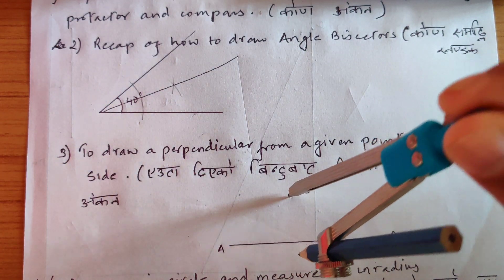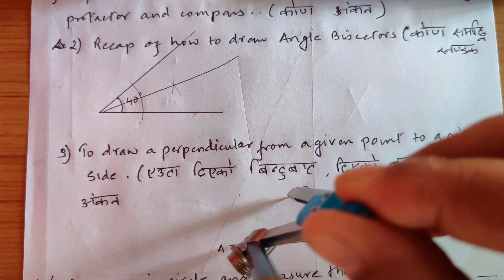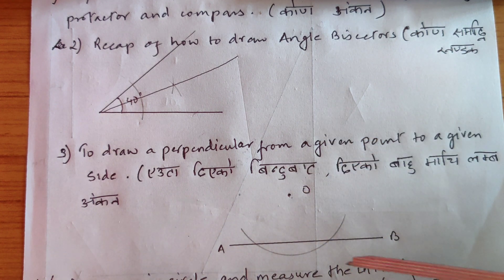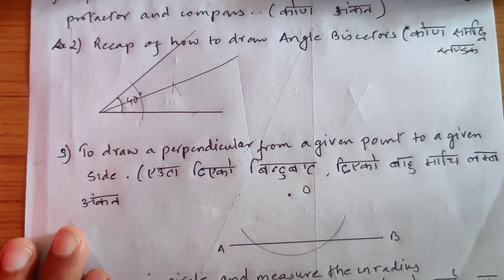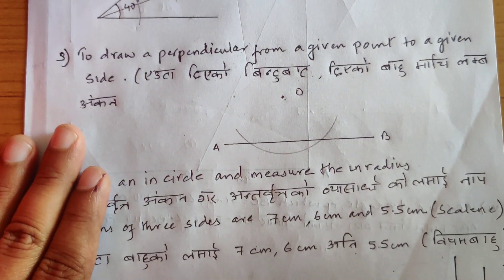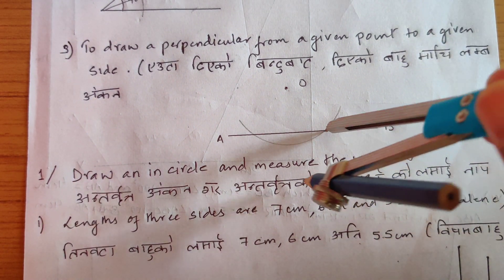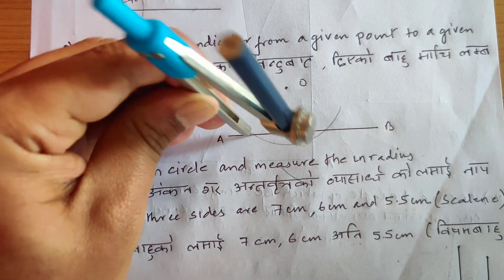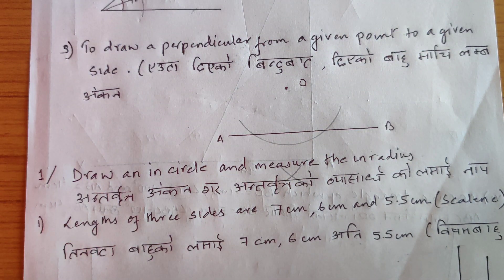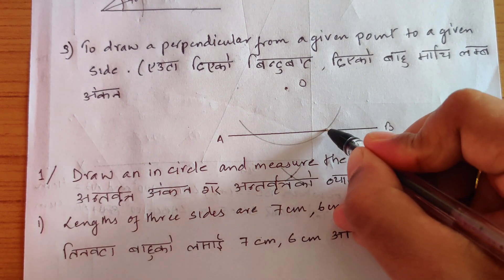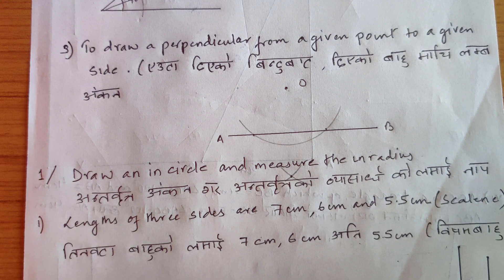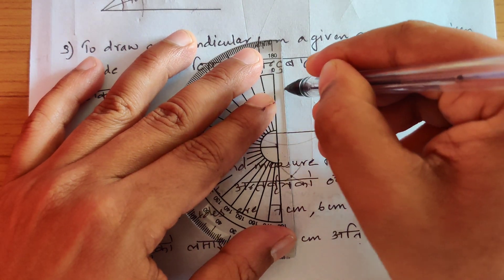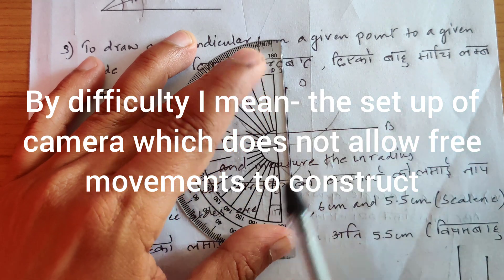To draw a perpendicular from given point O, take any measurement more than the line. Make an arc. With the same measurement, make another arc out here. This is how we draw a perpendicular from a given point. Please always use a scale — never use a protractor for this.